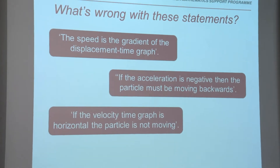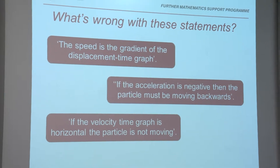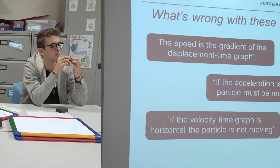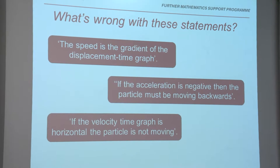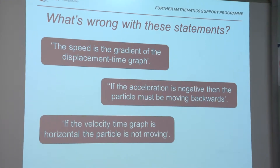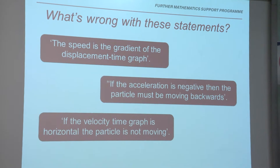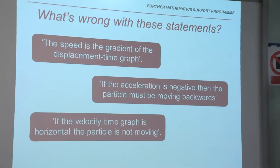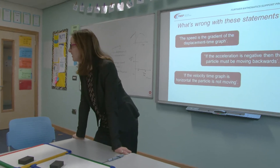The speed is the gradient of a displacement-time graph — so it should be velocity, not speed. Why? Because speed is scalar and velocity is vector. If the acceleration is negative, then the particle must be moving backwards — could it be decelerating? If you throw a ball up in the air, gravity is pulling it down so it has a negative acceleration, but it's obviously moving up. And when it reaches its peak and starts falling, it has negative acceleration and the magnitude of its velocity is increasing.